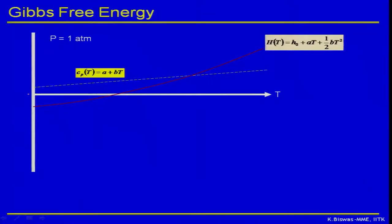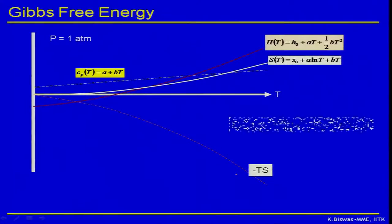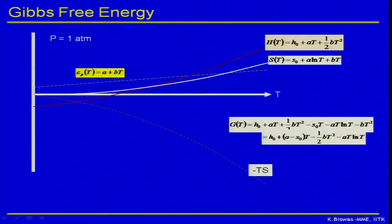Integrating Cp, H equals H0 plus A·T plus ½B·T². The red curve shows H as a function of temperature. Entropy is given as S0 plus A·log(T) plus B·T, since integrating Cp/T gives A·log(T) plus B·T. Minus T·S is S multiplied by T, taken negative, shown as the dotted red curve below. G equals H minus T·S, giving G = H0 + (A − S0)·T − ½B·T² − A·T·log(T). The white line shown is G(T).